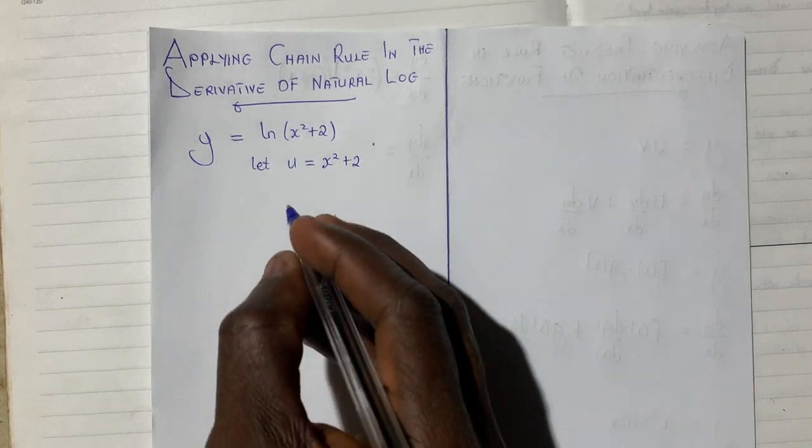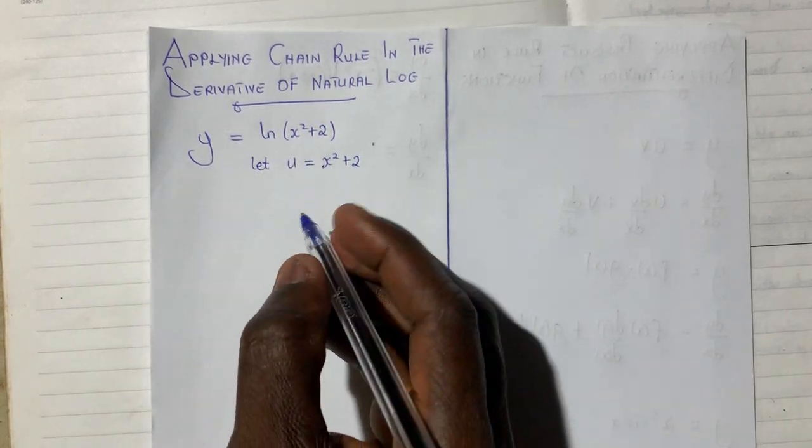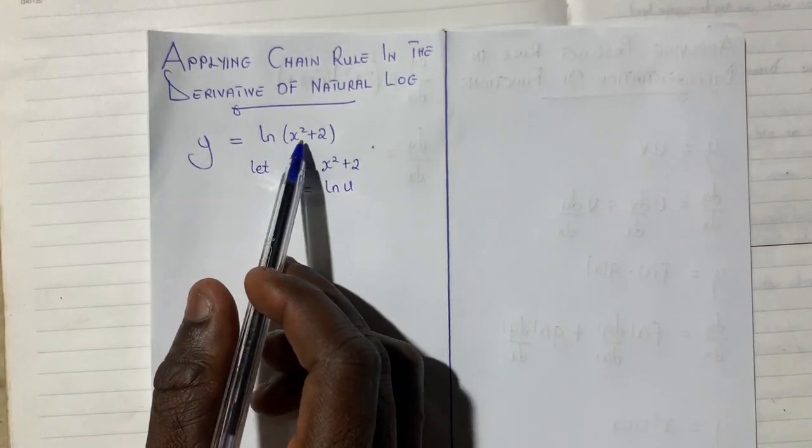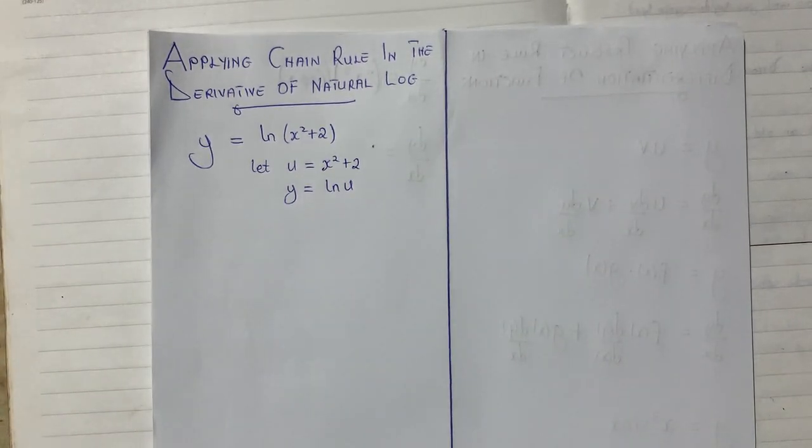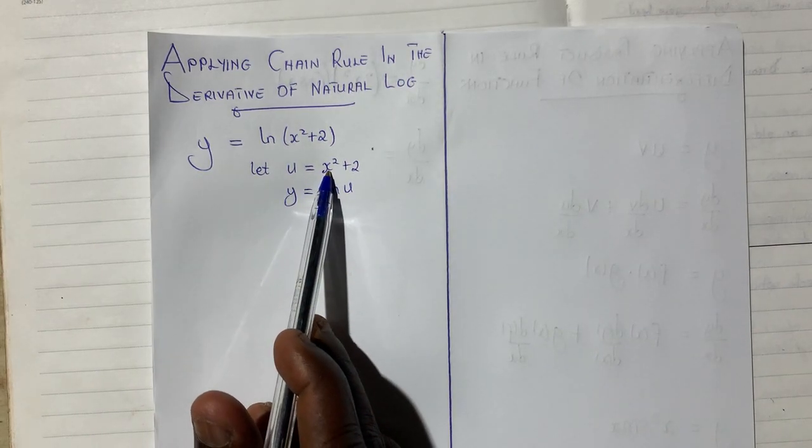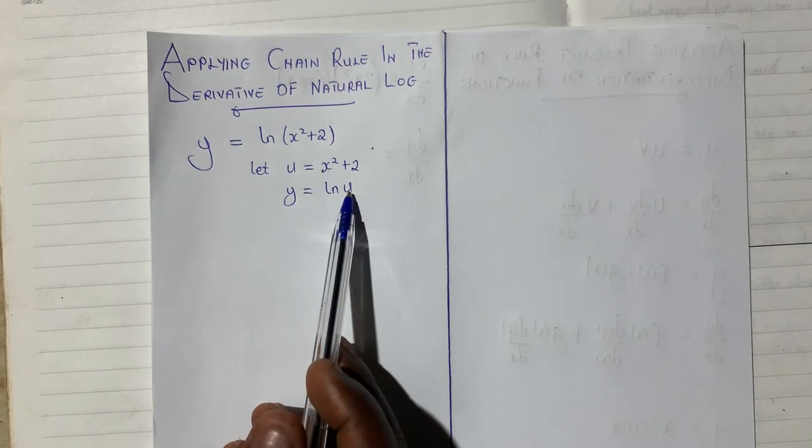Now that we have this, the main equation or the original equation therefore becomes y equals ln u since I said u should be equal to this. Your next step is to differentiate u with respect to x and then differentiate y with respect to u.